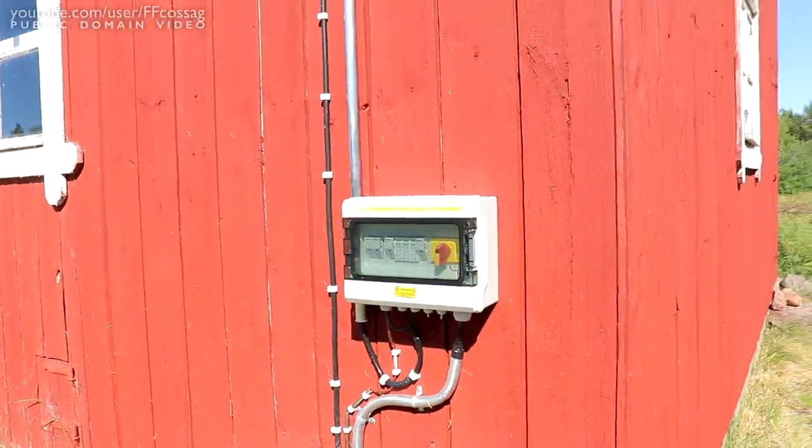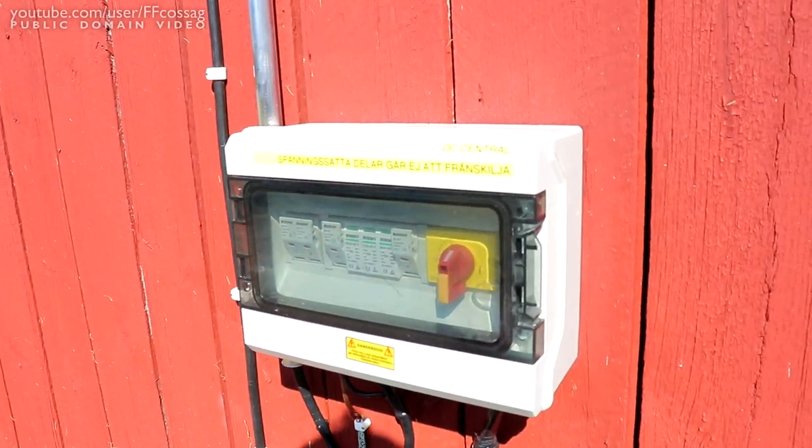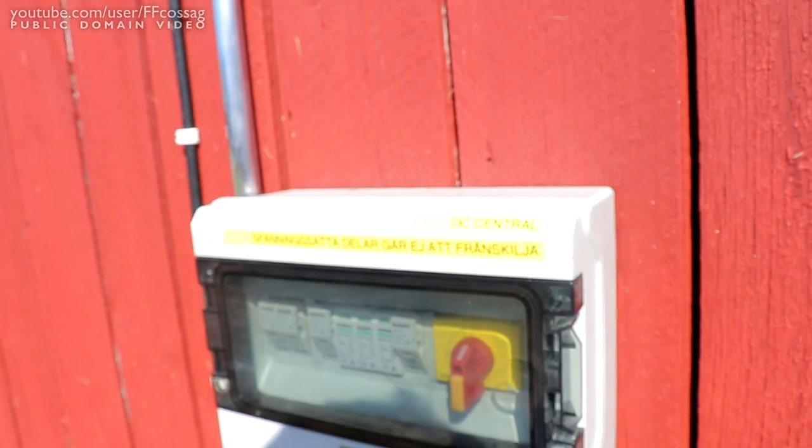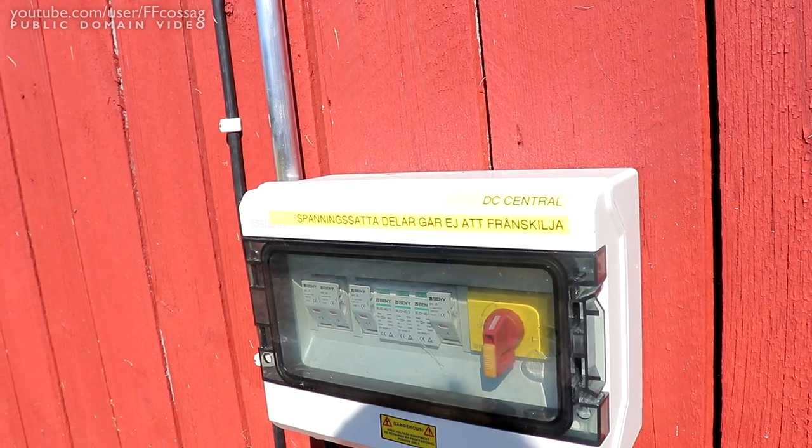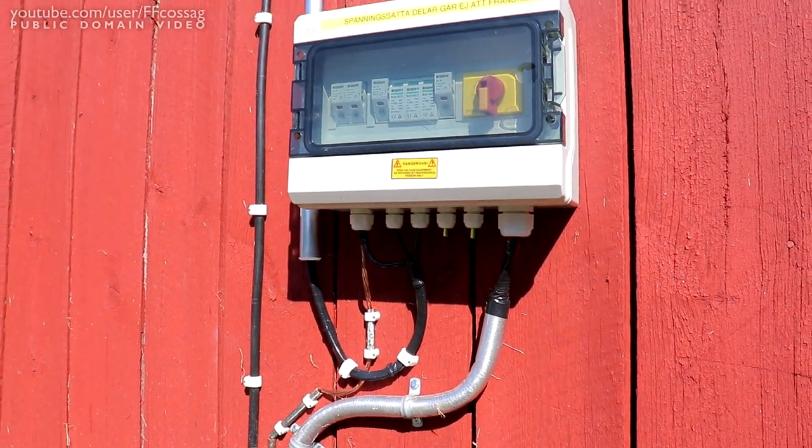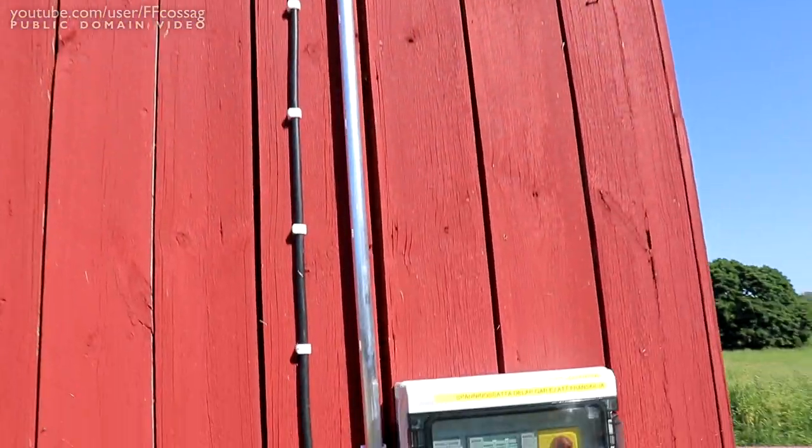So, well, this stuff has received some beautiful warning stickers, that says DC Central, energized parts cannot be isolated, and the wiring comes from the pipe there and goes into the DC box.